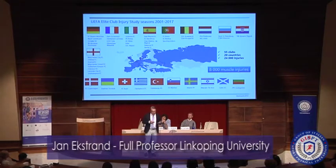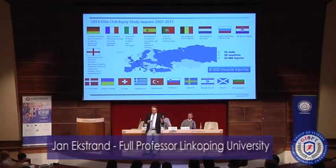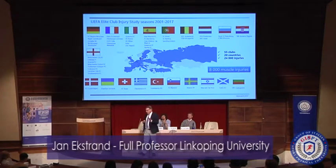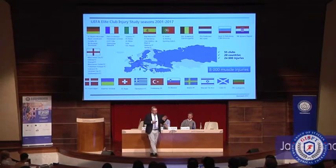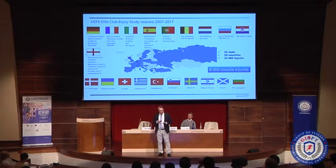We have from Italy: Juventus, Roma, Milan, Inter, Napoli, etc. They send us data every month, and some of the teams have done that for 16 years now. We have the largest database in the world in male elite football players with about 24,000 injuries. We're going to talk about muscle injuries today, and we have about 8,000 muscle injuries in the database.